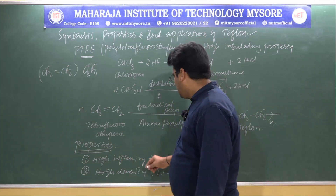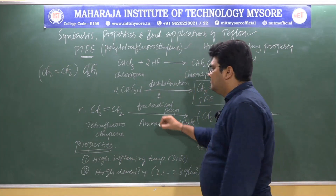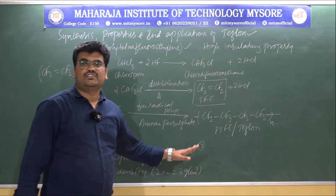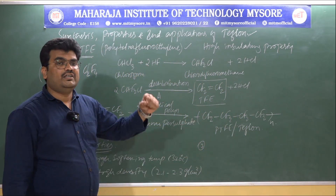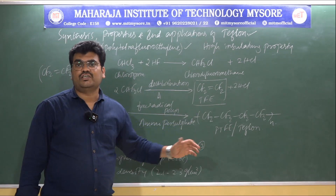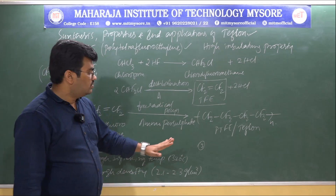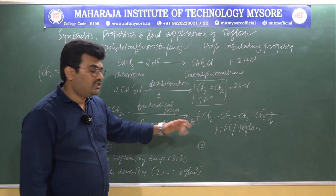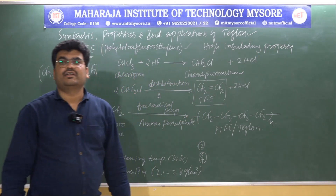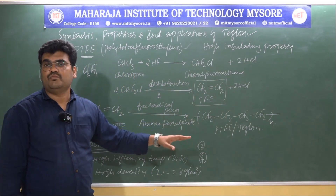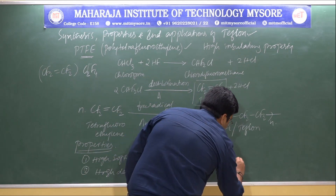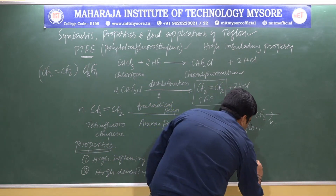Third, Teflon is chemically resistant, resistant to corrosion, can withstand very high temperatures, and is both heat resistant and flame resistant. Fourth, and very importantly, it is a very good electrical insulator, which is why it is commonly used for its insulation property.